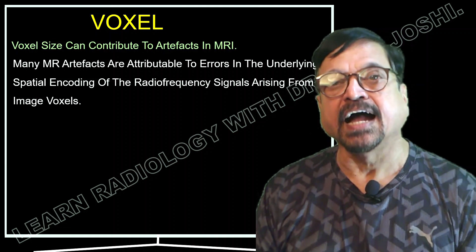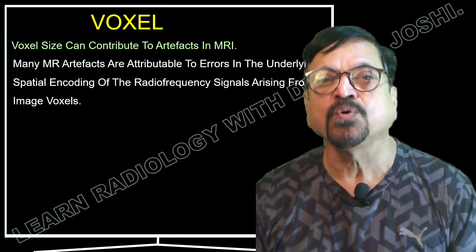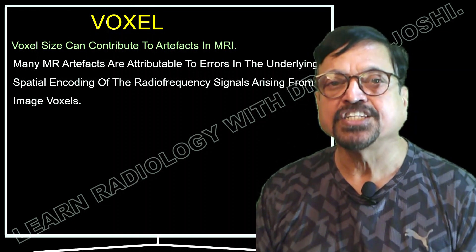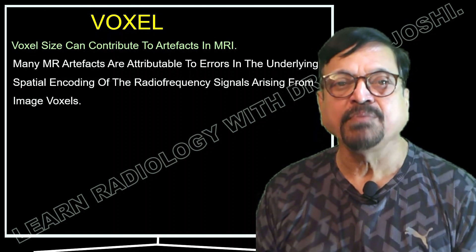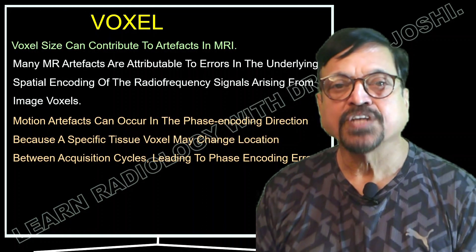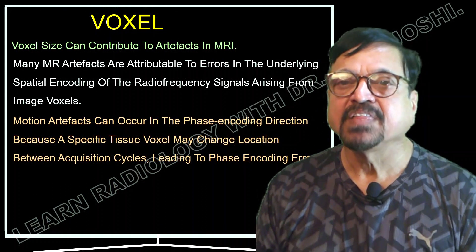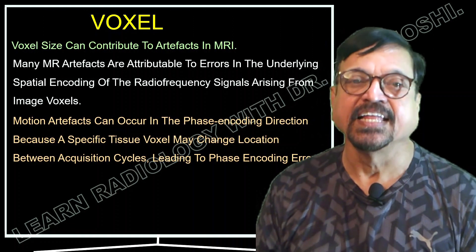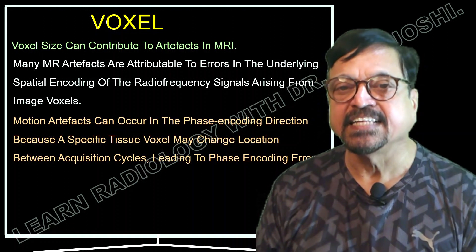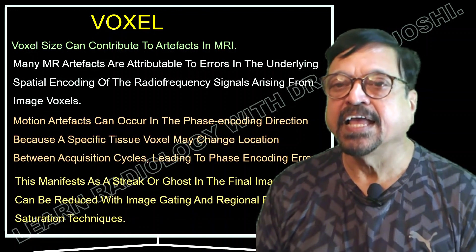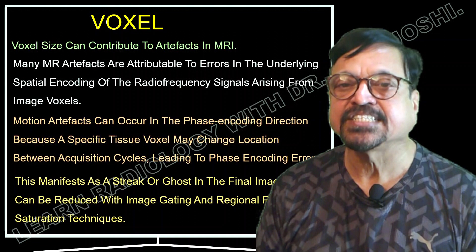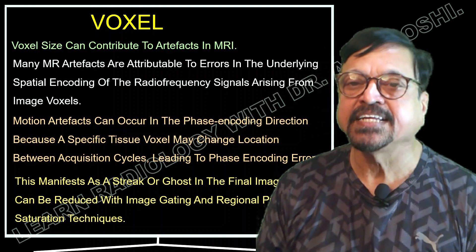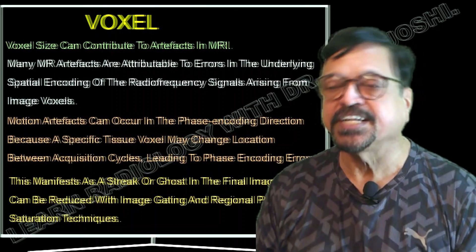Voxel size can also contribute to artifacts in MRI. Many MR artifacts are attributed to errors in spatial encoding of the radio frequency signals arising from the image voxel. Motion artifacts can occur in the phase encoding direction because a spatial tissue voxel may change location between acquisition cycles, leading to phase encoding errors. This manifests as streaks or ghost artifacts in the final image, and can be reduced when image gating and regional pre-saturation techniques are used.